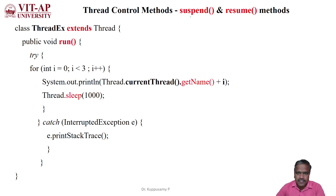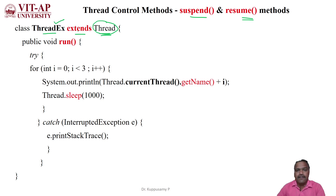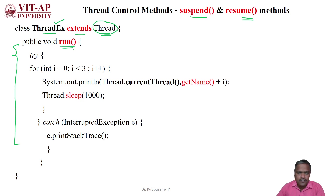Here I am giving an example for suspend and resume methods. This program has the class name threadex, which extends the Thread class. By extending the Thread class, this user-defined class gains the features of multithreaded programming. Inside this class I am going to define a run method, which performs the actions inside its body.